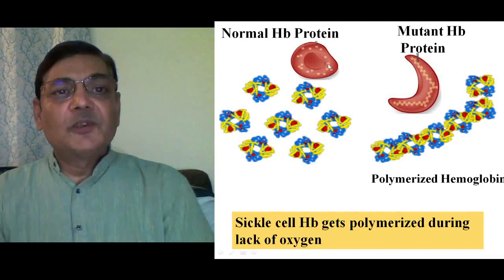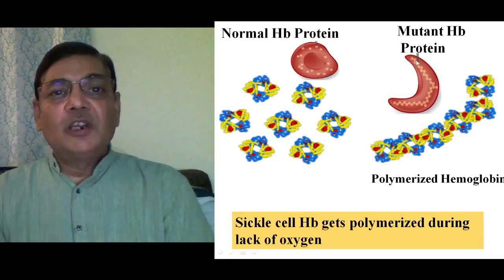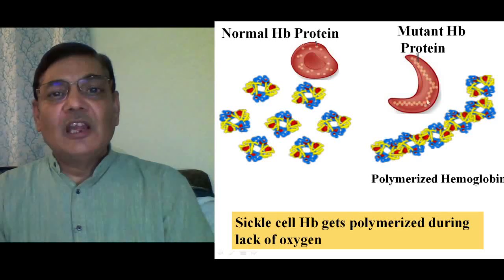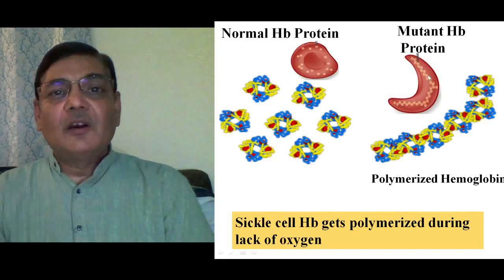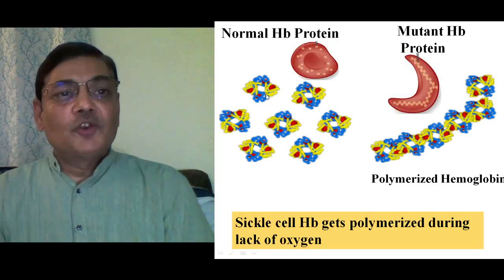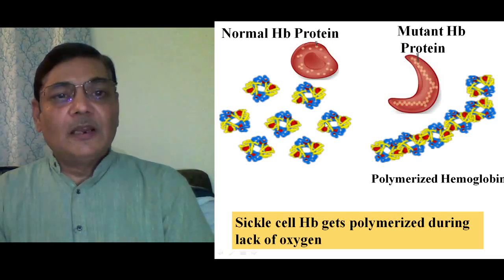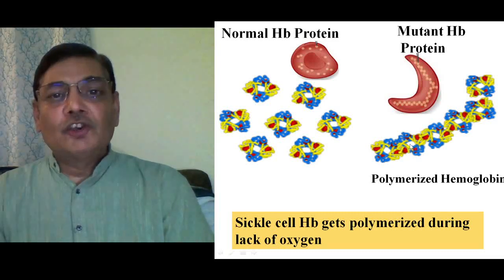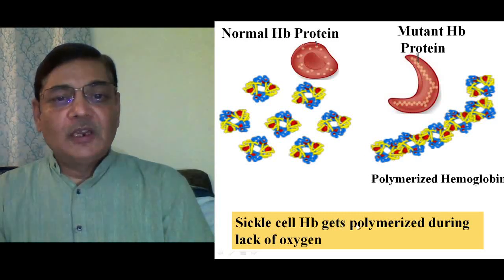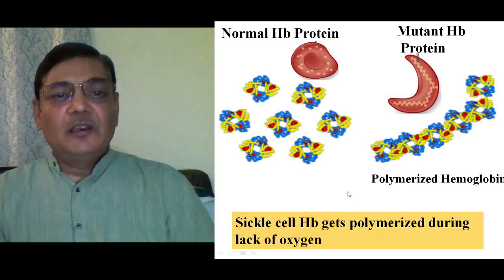But when glutamate is replaced by valine, the beta globin protein undergoes polymerization, particularly when the RBC is not receiving an ample amount of oxygen. In the absence of oxygen, there will be polymerization of the beta globin protein, and as a result the shape of the RBC gets distorted. In normal hemoglobin, the globins are arranged properly, whereas in mutant hemoglobin there is polymerization, which distorts the shape of the RBC. Sickle cell hemoglobin gets polymerized during lack of oxygen.